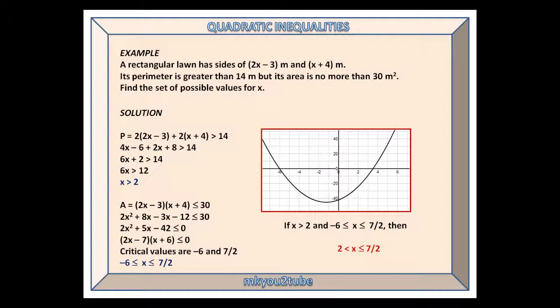The area can be written as a equals 2x minus 3 times x plus 4, which is less than or equal to 30. This simplifies to 2x squared plus 5x minus 42 less than or equal to 0, which after factorising and solving gives critical values of minus 6 and 7 over 2.